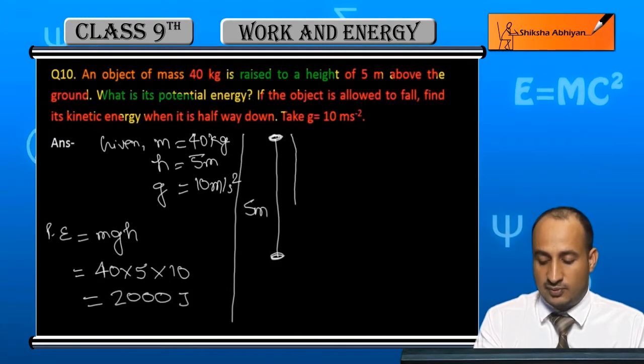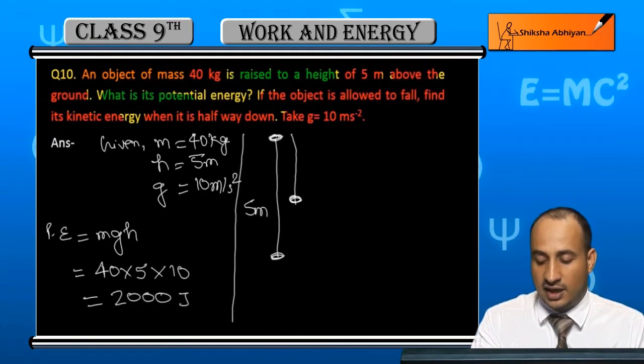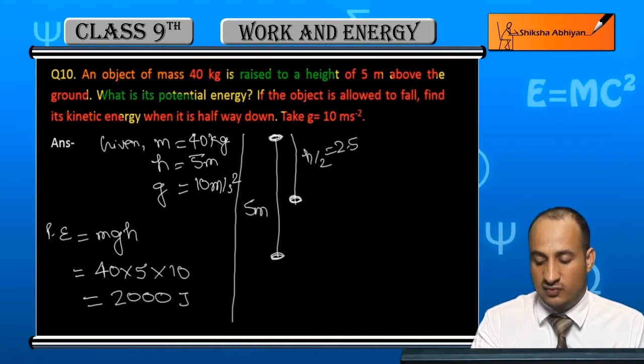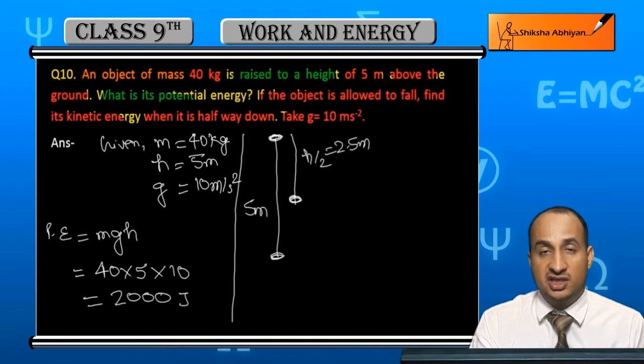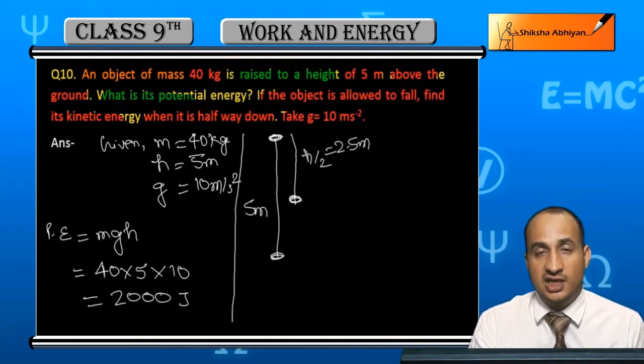But when you drop it at half way, the height will be h by 2, that is 2.5 meter. In this case, the potential energy decreases and becomes half due to the height.